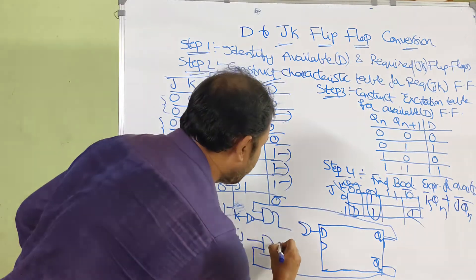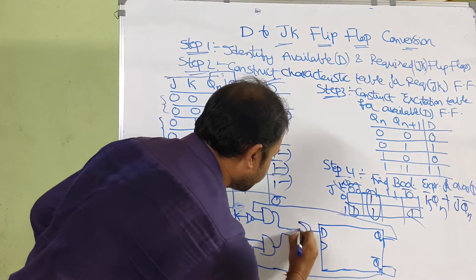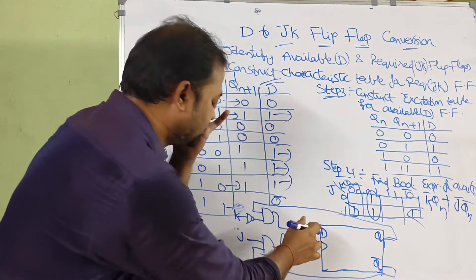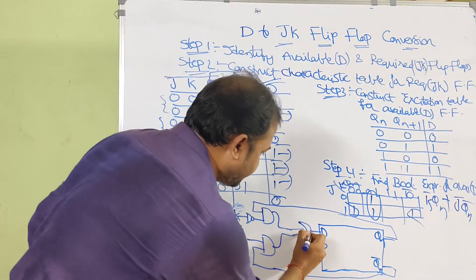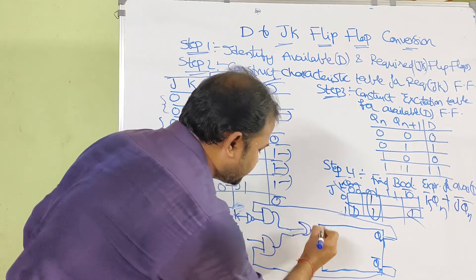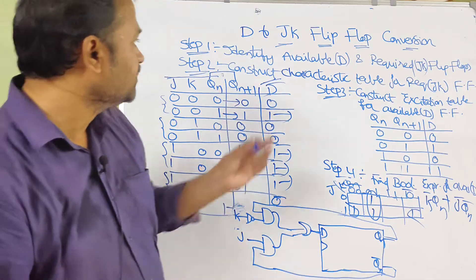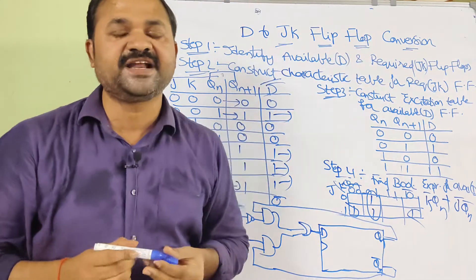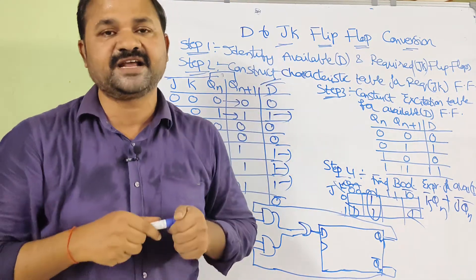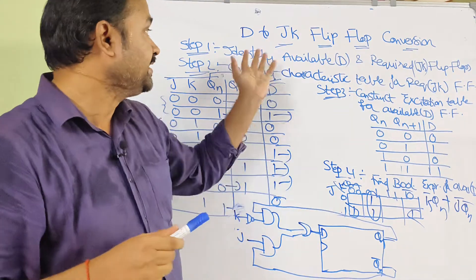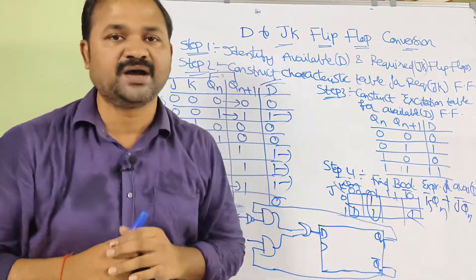Simply we perform the OR operation on the outputs of the two AND gates. That output is passed as input D to the D flip-flop. In this way, we can convert a D flip-flop to a JK flip-flop.